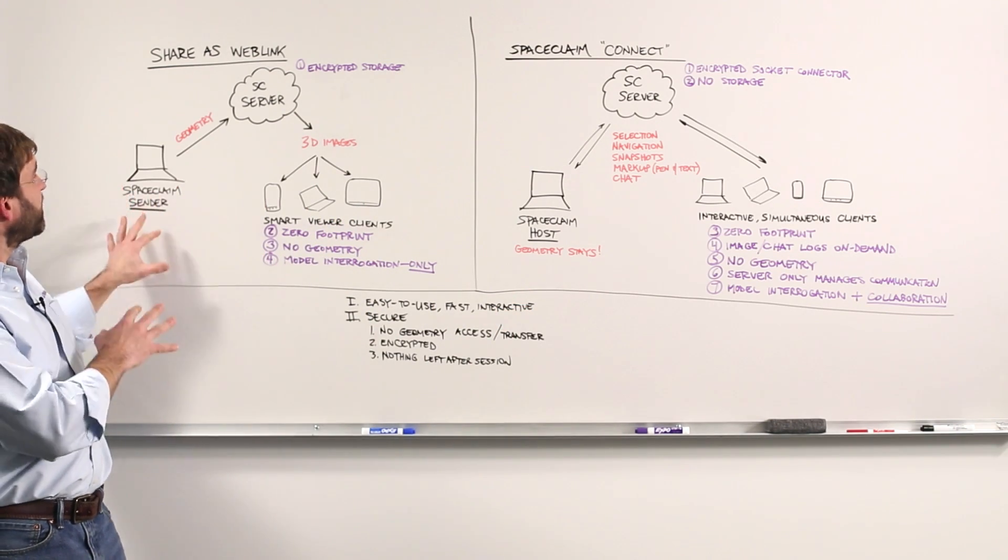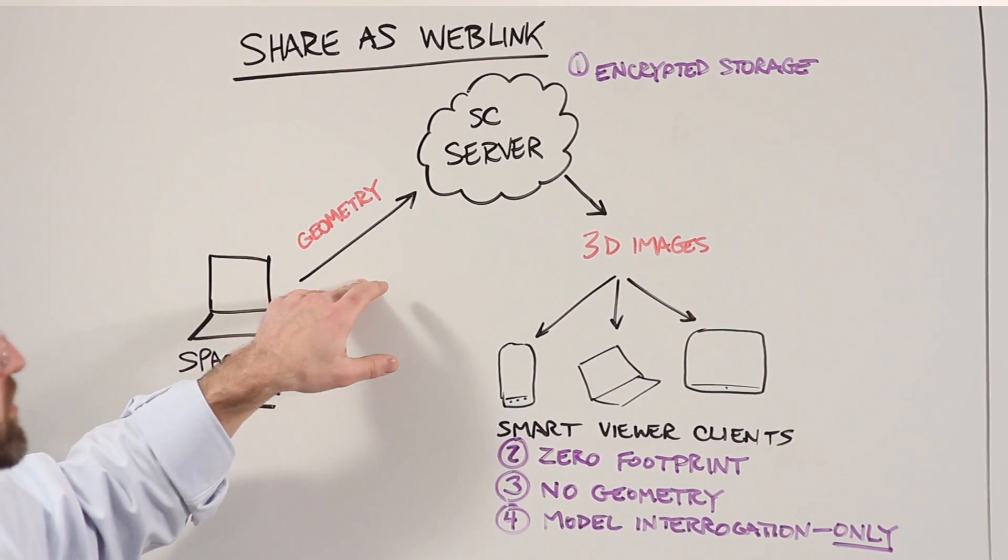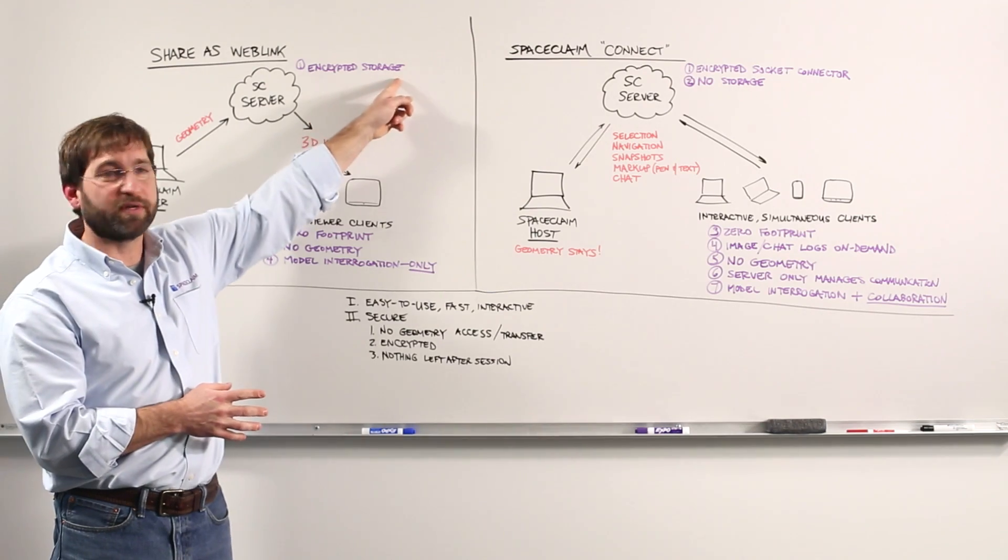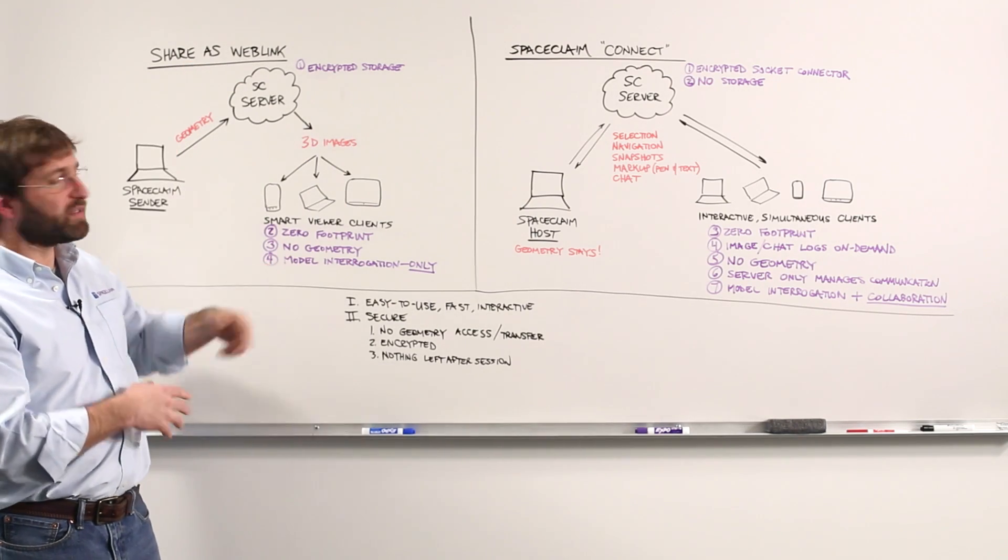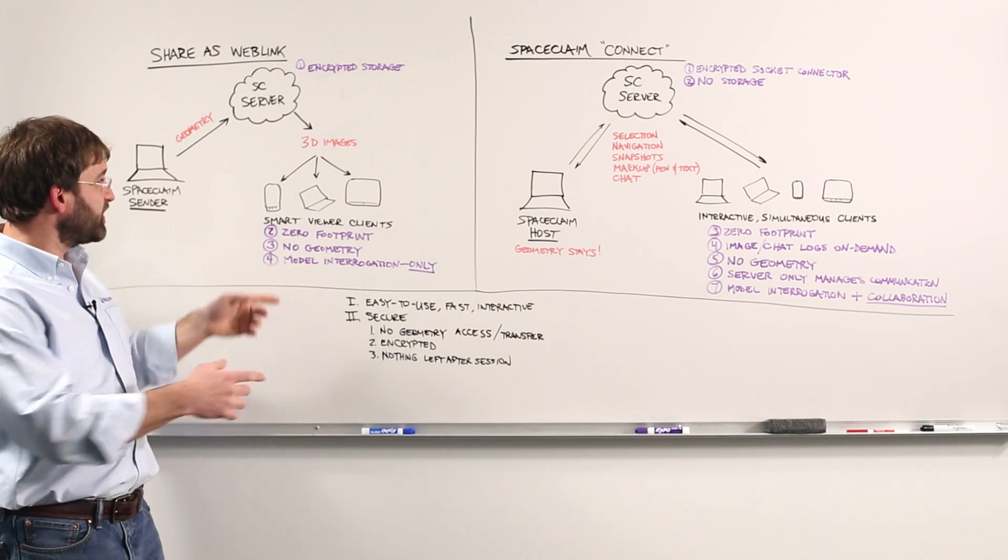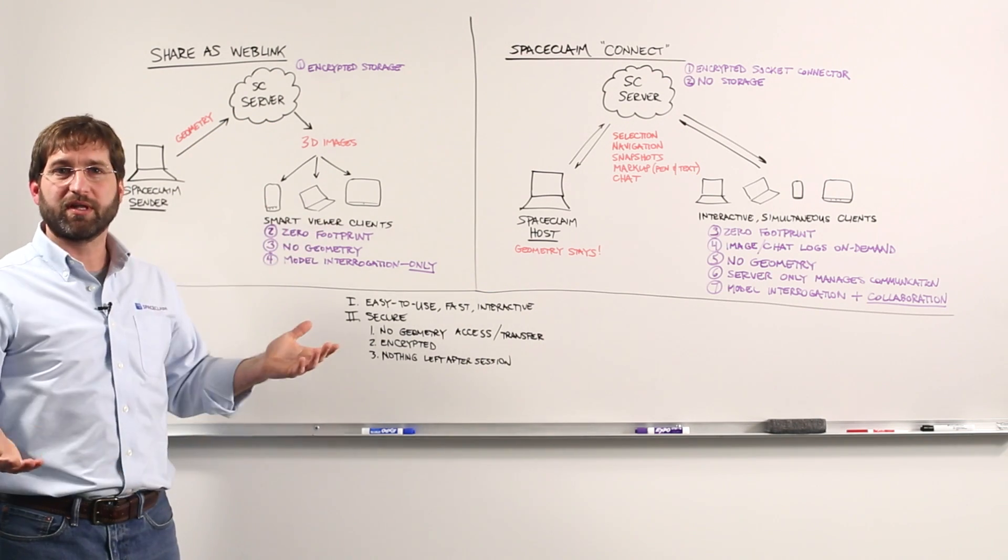In SpaceClaim, you have a function that sends geometry, sends the SC document to the SpaceClaim server. This is encrypted storage. The web link that goes to all your clients is 3D images. I call them 3D images because there's zero footprint install in the clients,